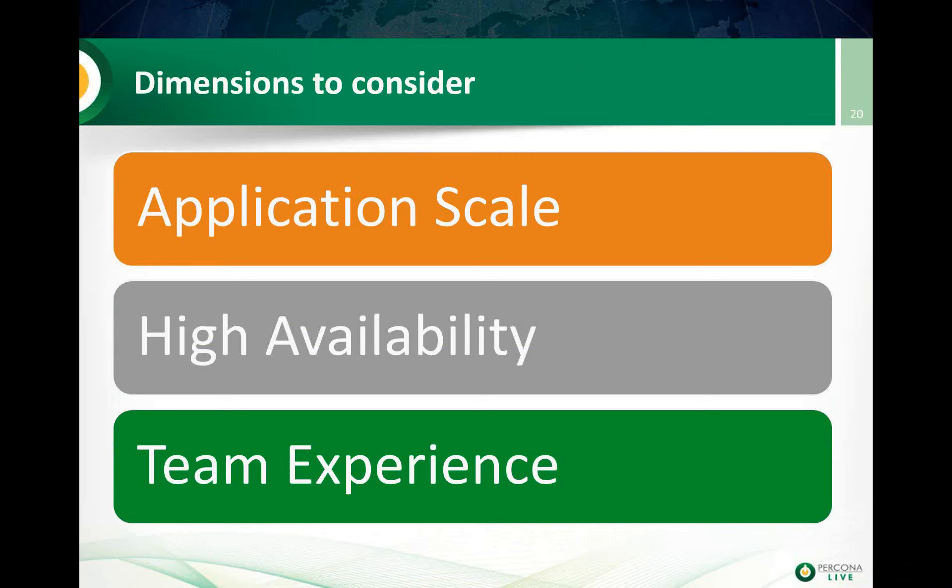When looking at the architecture, there are a few dimensions which are very important to consider. One is application scale — not all applications need the same scale. Are you planning to do the next Facebook, or launching a web store for a local cafe? They don't have the same scale requirements. What are your availability requirements? That's another component which impacts architecture. And you also have to think about team experience — you can have a perfect architecture on paper, but if it's too complicated for your team to implement and operate, you will fail.